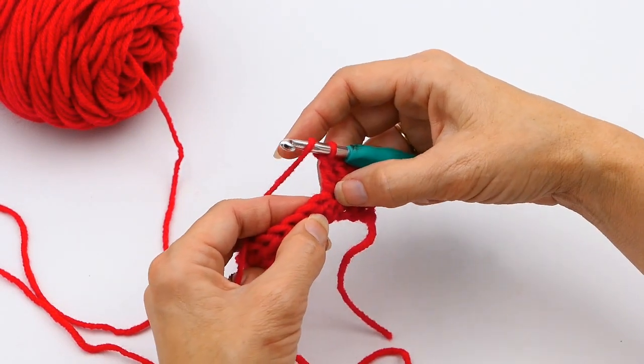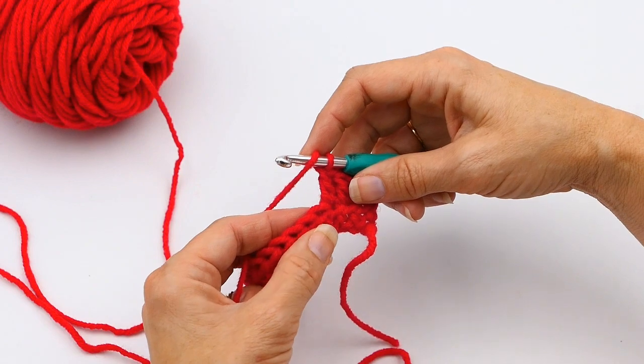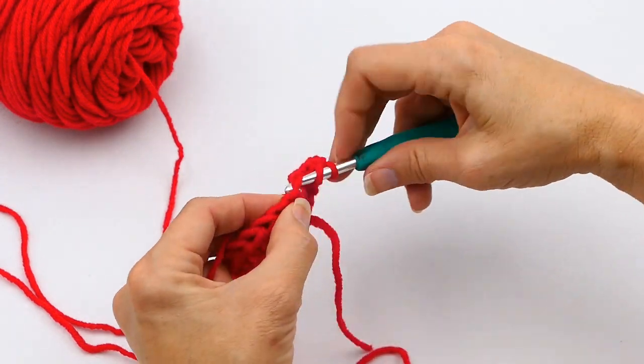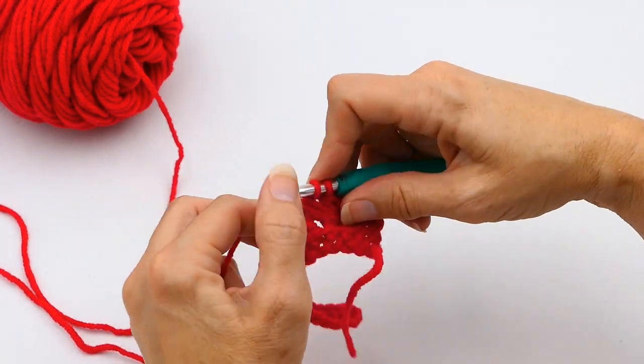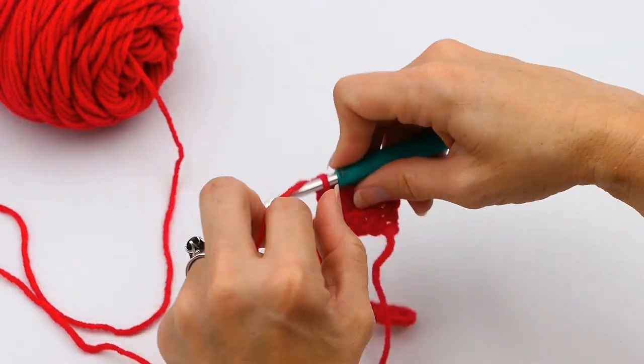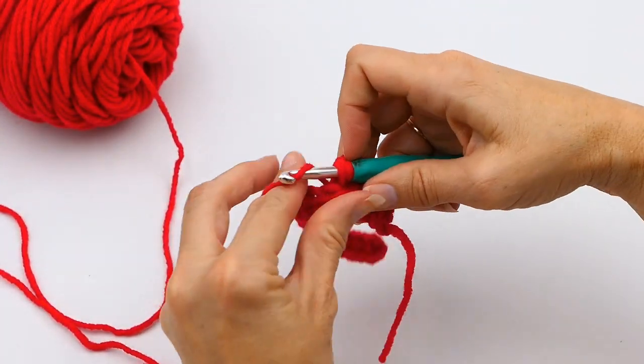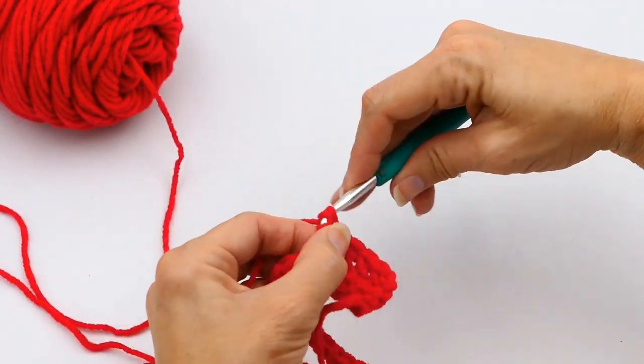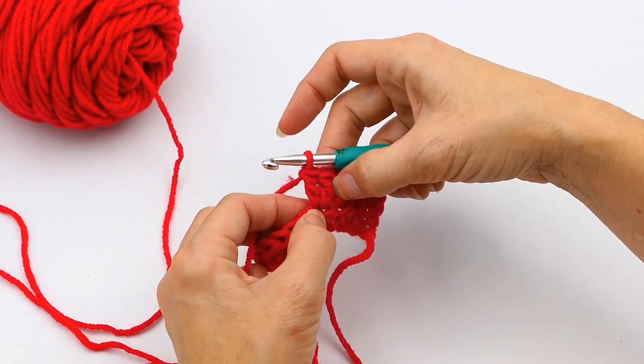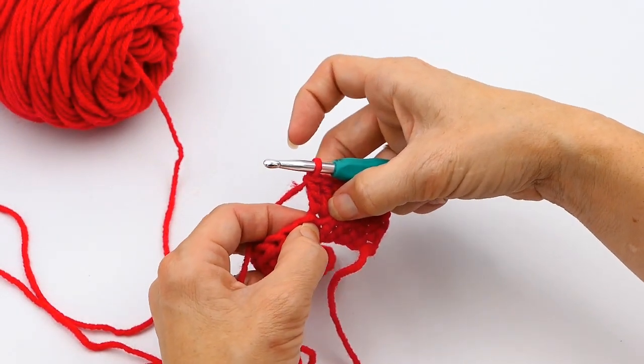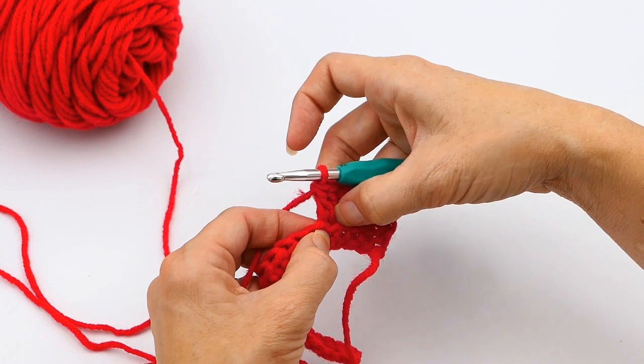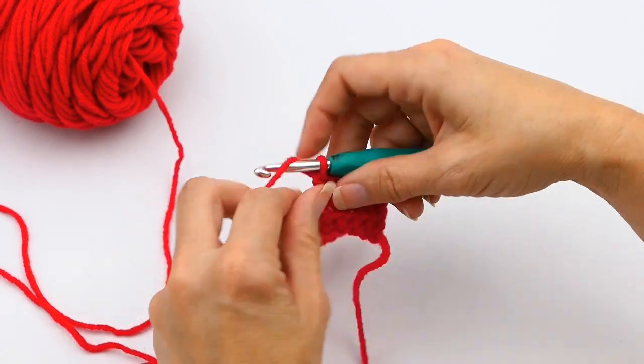So essentially, an increase is making more than one stitch in one stitch from the previous row. So then I'm making two double crochets in the stitch from the previous row, so I have two right there in the stitch from the previous row.